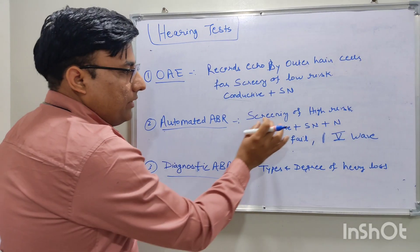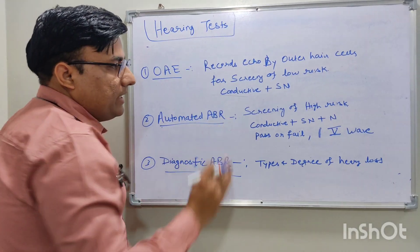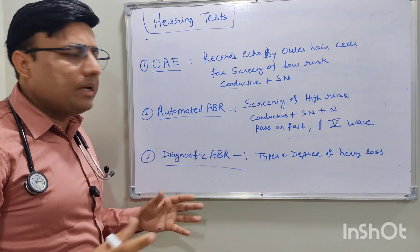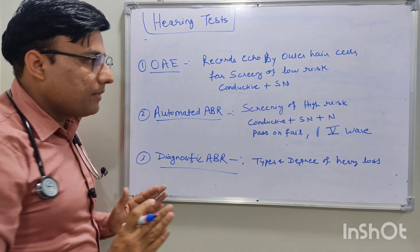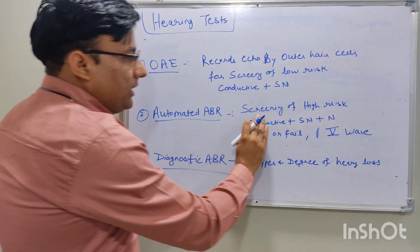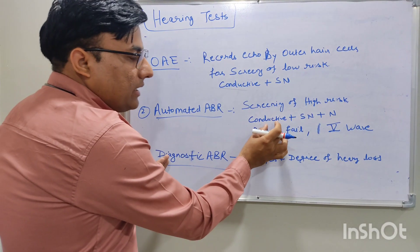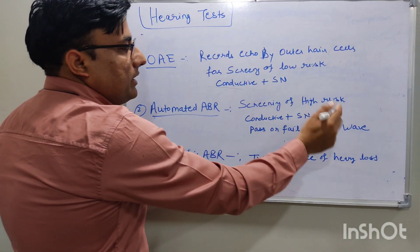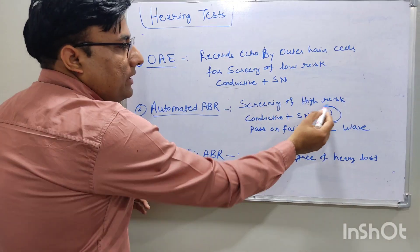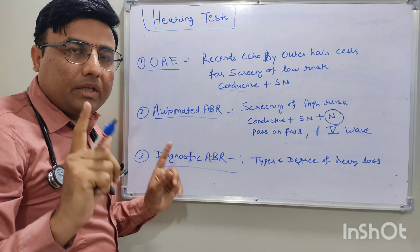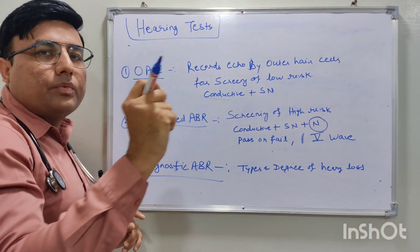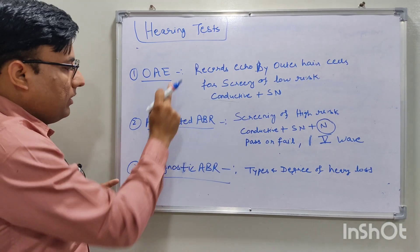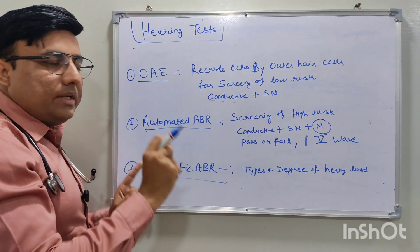Automated ABR is used for screening high-risk babies. High-risk babies include any baby admitted to the NICU for more than five days, preterm babies, and babies with neonatal hyperbilirubinemia. For low-risk babies, use OAE for screening; for high-risk babies, use automated ABR. ABR can detect conductive, sensorineural, and neural hearing loss. OAE cannot detect neural hearing loss or auditory neuropathy because outer hair cells are normal in that condition.